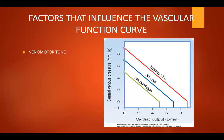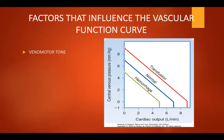The next factor that can affect the vascular function curve is venous motor tone. This affects the increased and decreased blood volume curves. If there is a transfusion, cardiac output is also high. If there is hemorrhage or bleeding, cardiac output is also low. Similar shifts in the vascular function curve can be produced by increases and decreases in venous motor tone. The transfusion curve could represent an increase in venous motor tone, whereas the hemorrhage curve could represent a decrease in tone.